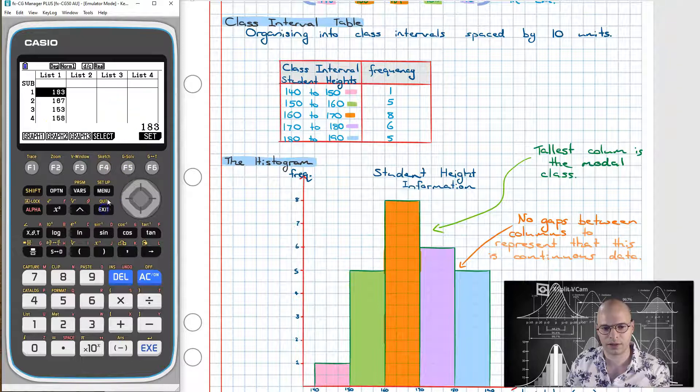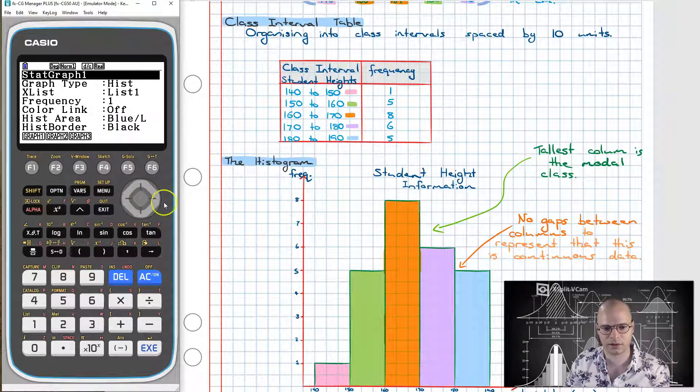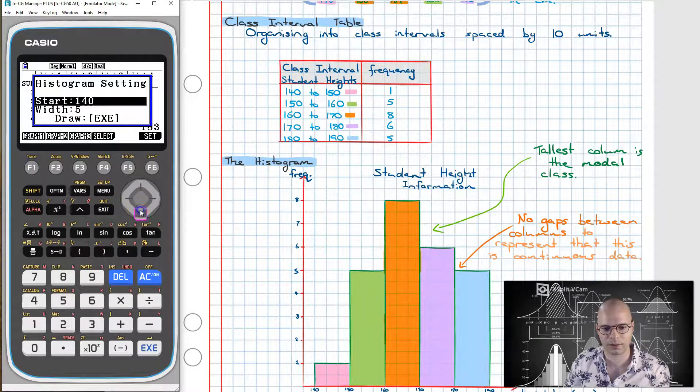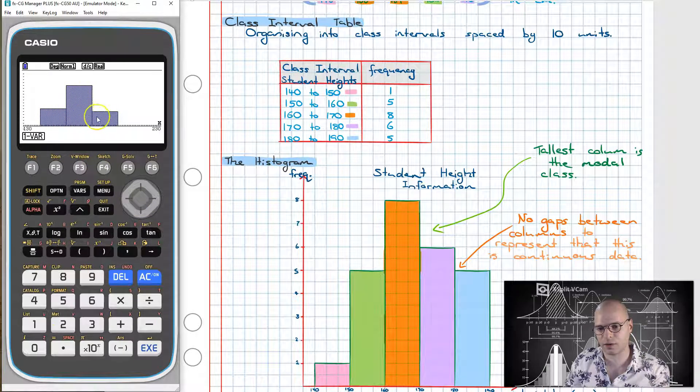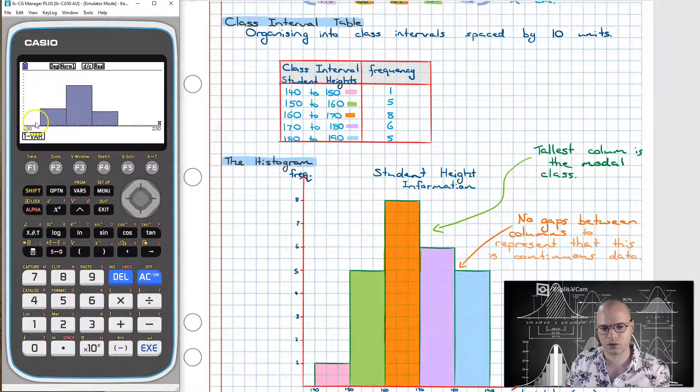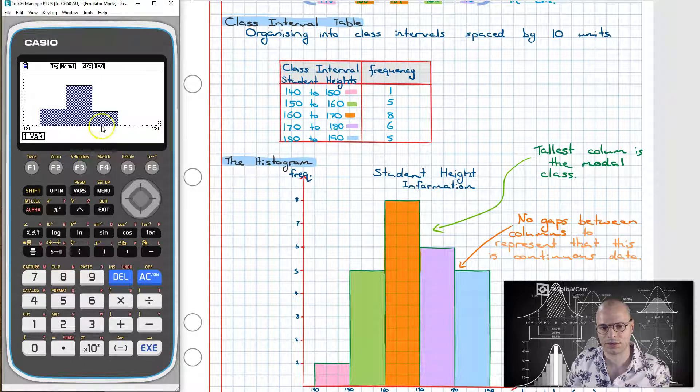Or if we don't need as much detail we could increase the class interval so from 5 we can take it up to say 20. Of course what we find is that our data gets further bunched together. However the power of using a calculator to graph or to examine what the histogram will look like is that it gives us a bit of foresight.